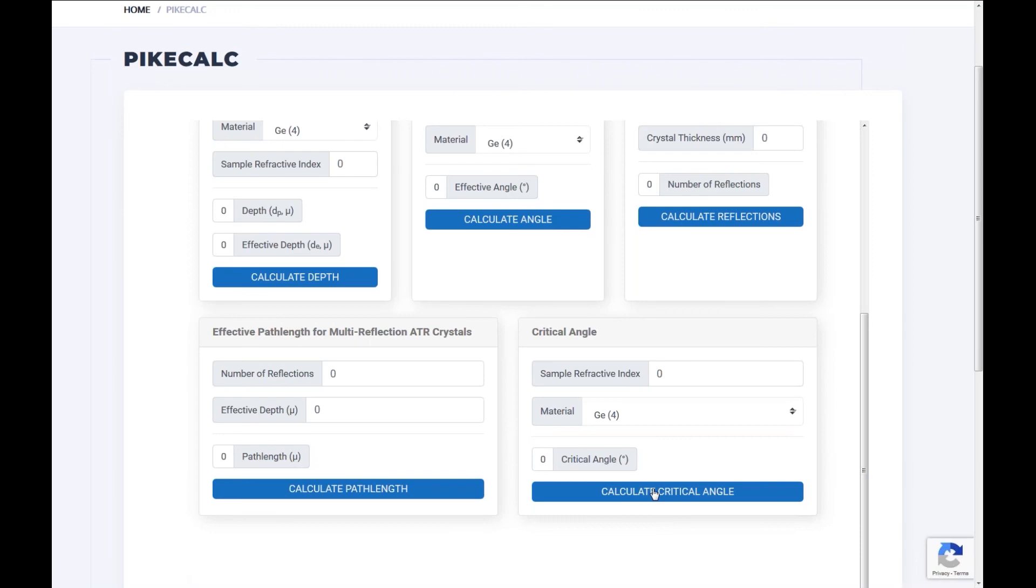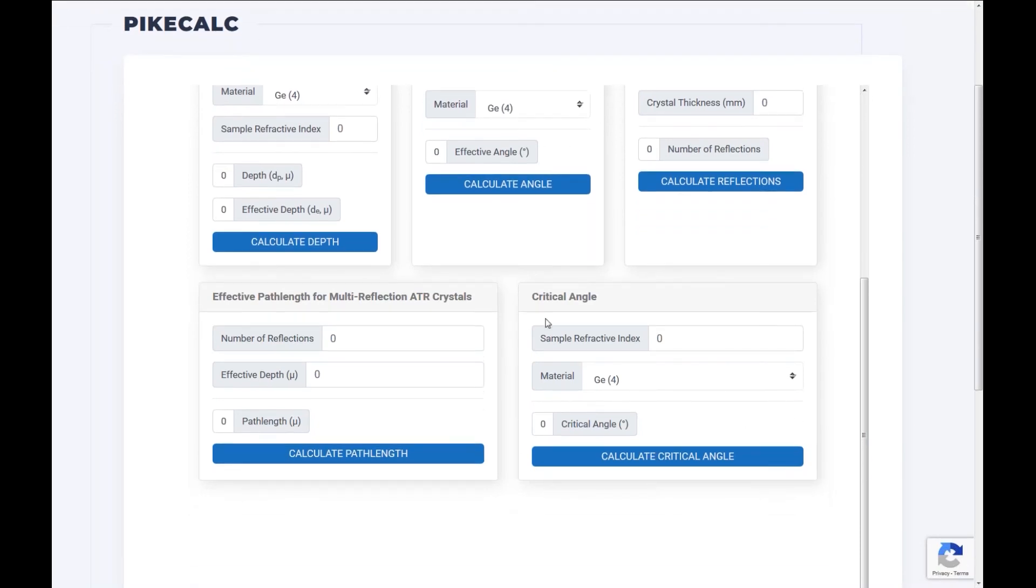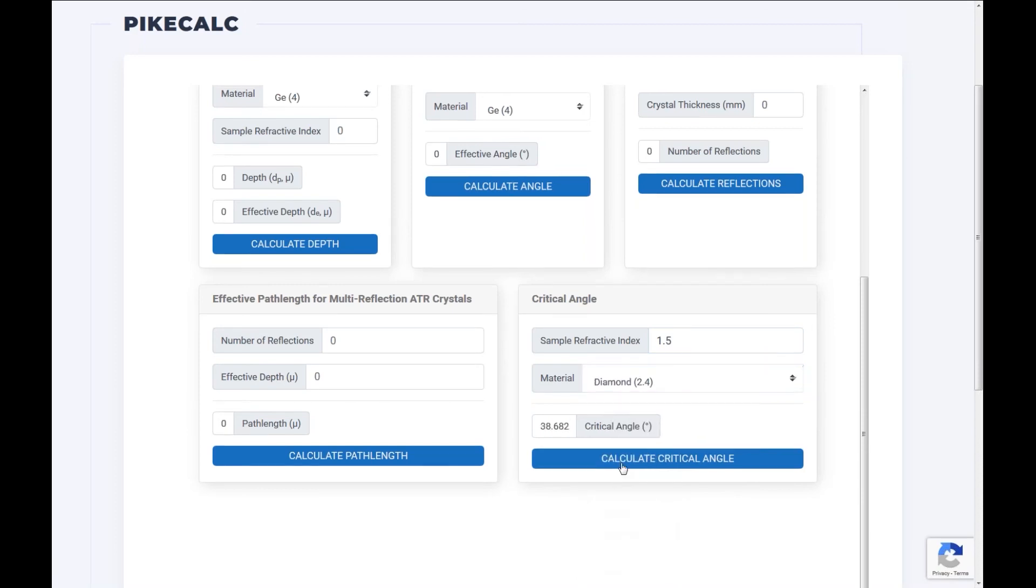Okay. That's the box, the lower right hand side box. So to use this, to calculate the critical angle, we're going to put a refractive index of a sample. A 1.5 is typical for a polymer. So let's just put that in there. And let's look at, say we're using a diamond ATR and let's calculate the critical angle.